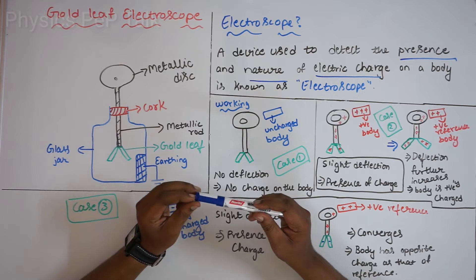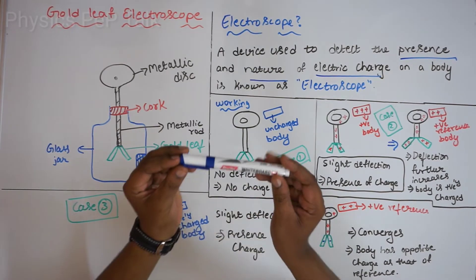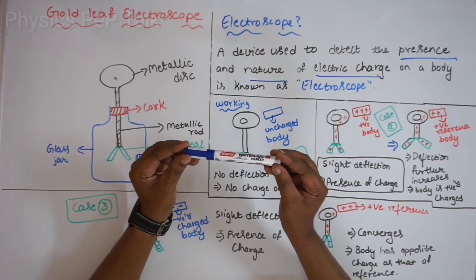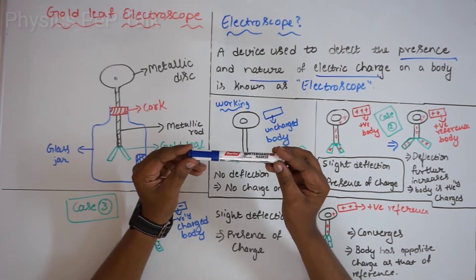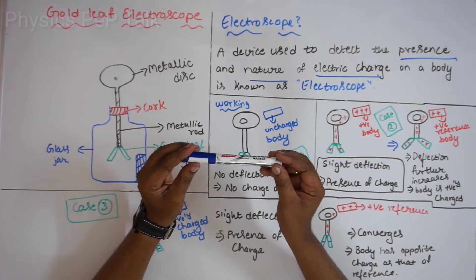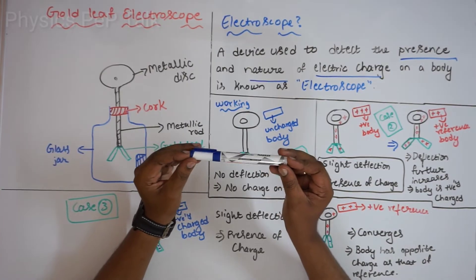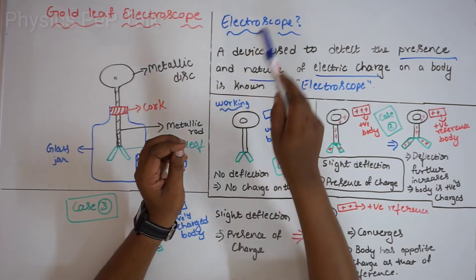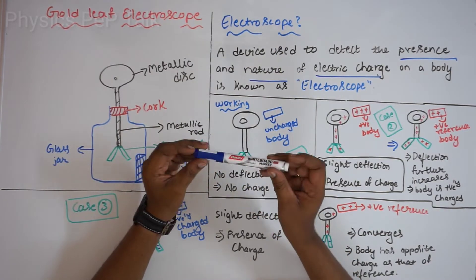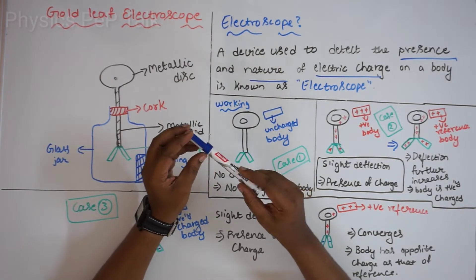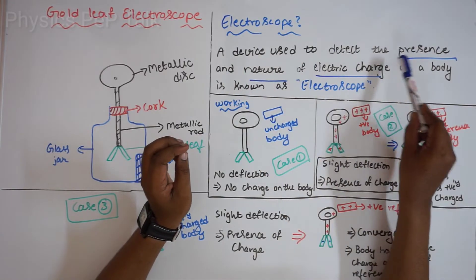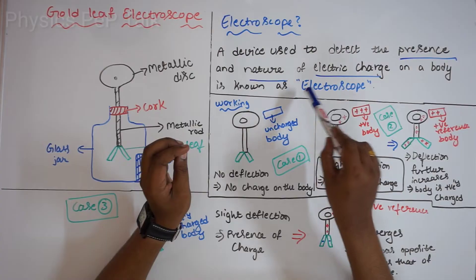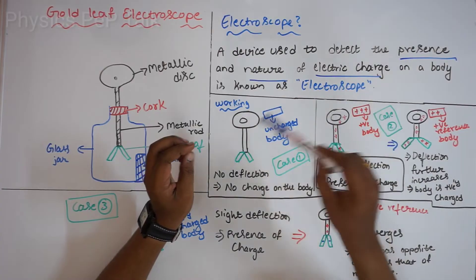Electroscope, or gold leaf electroscope. A device used to detect the presence and nature of electric charge on a body is known as electroscope. It tells you whether a body is charged or not, and it checks for the presence and nature of electric charge.